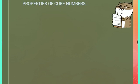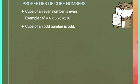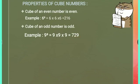Let's look at some properties of cube numbers. The cube of an even number is even — for example, 6 is an even number and its cube is 216, which is also even. The cube of an odd number is odd — for example, 9 is an odd number and its cube is 729, which is also odd. You can take any even or odd number and find its cube: the cube of an even number is always even, and the cube of an odd number is always odd.